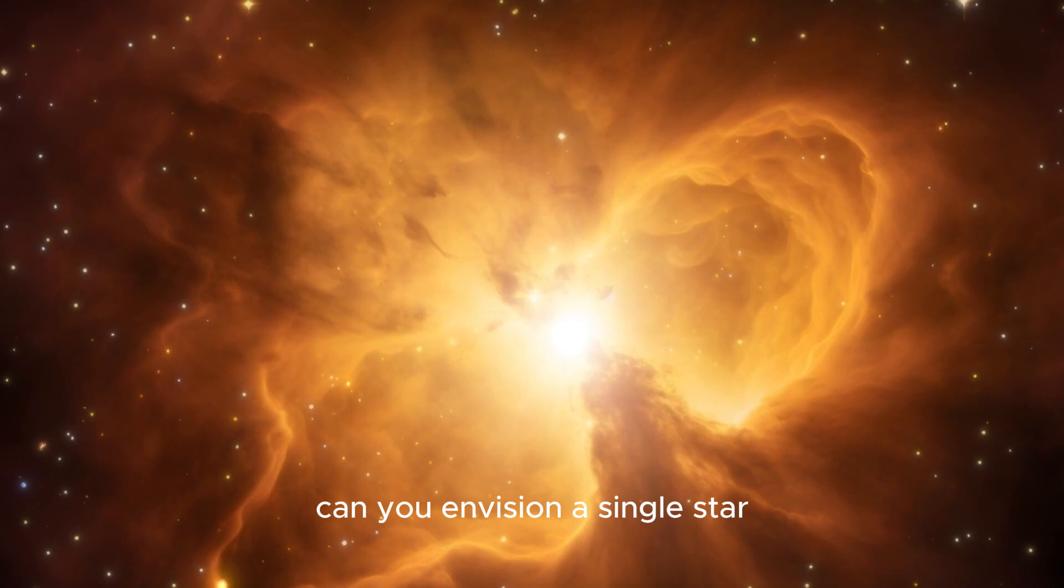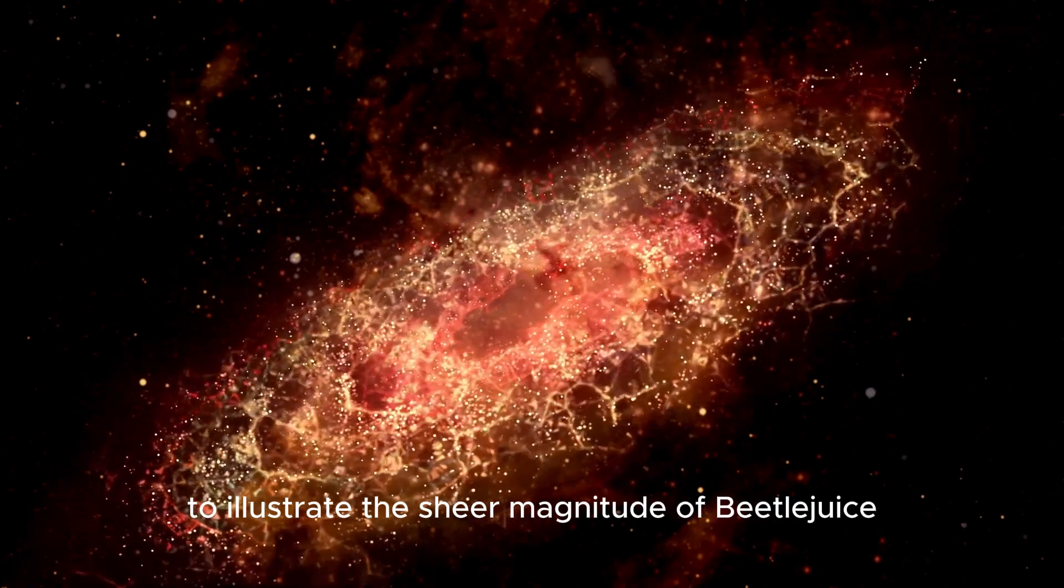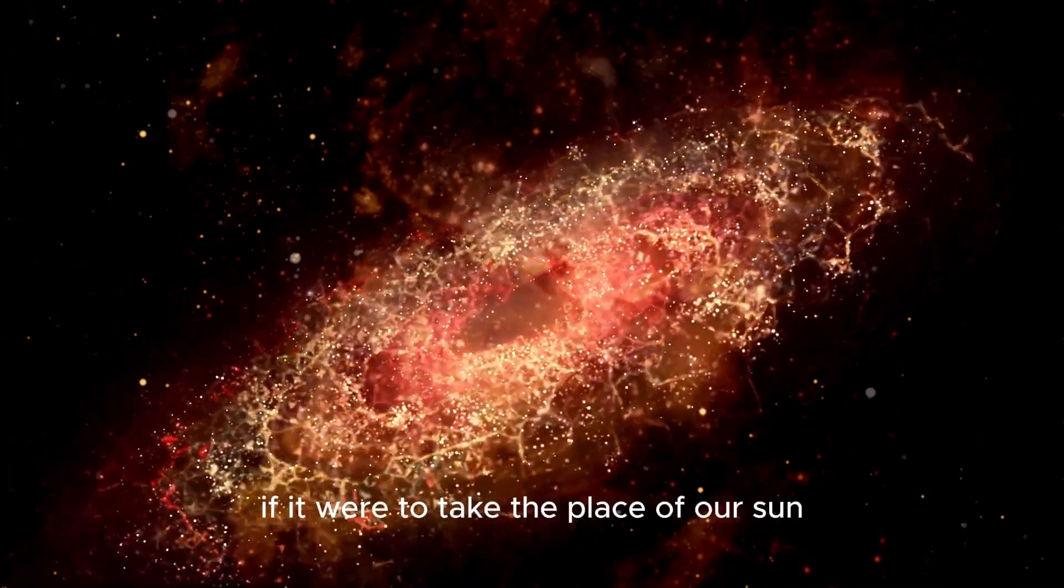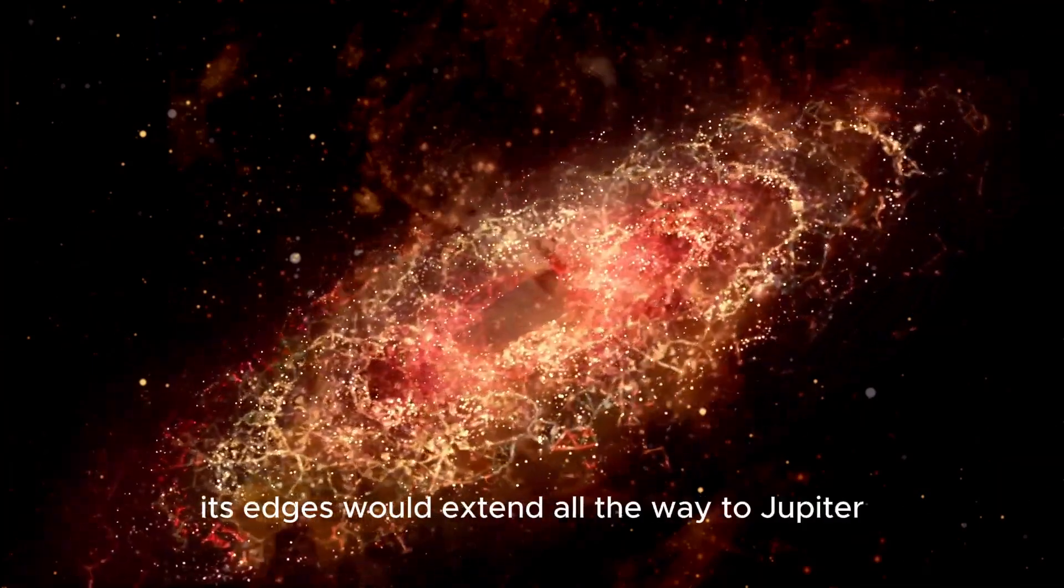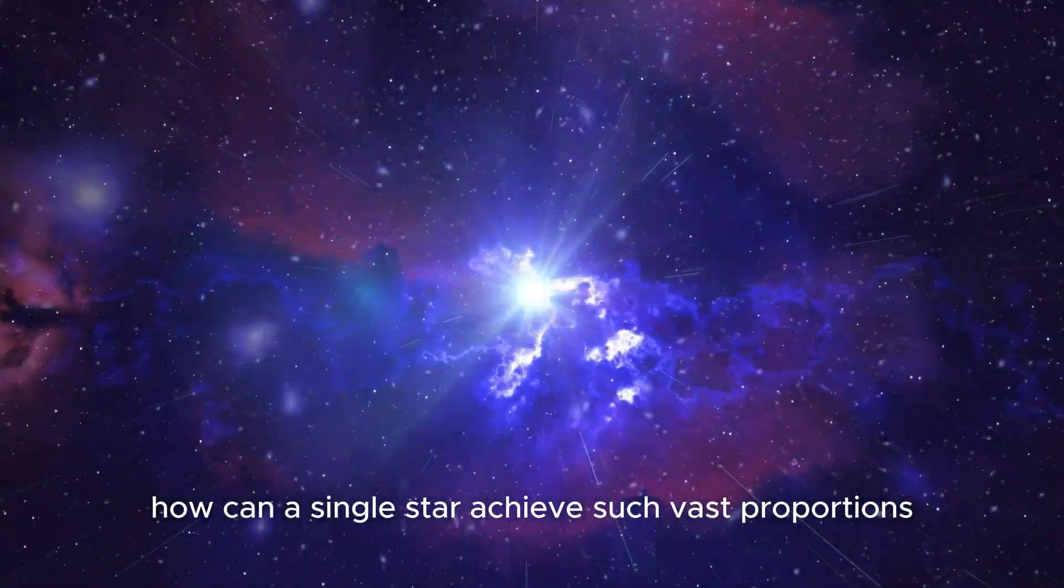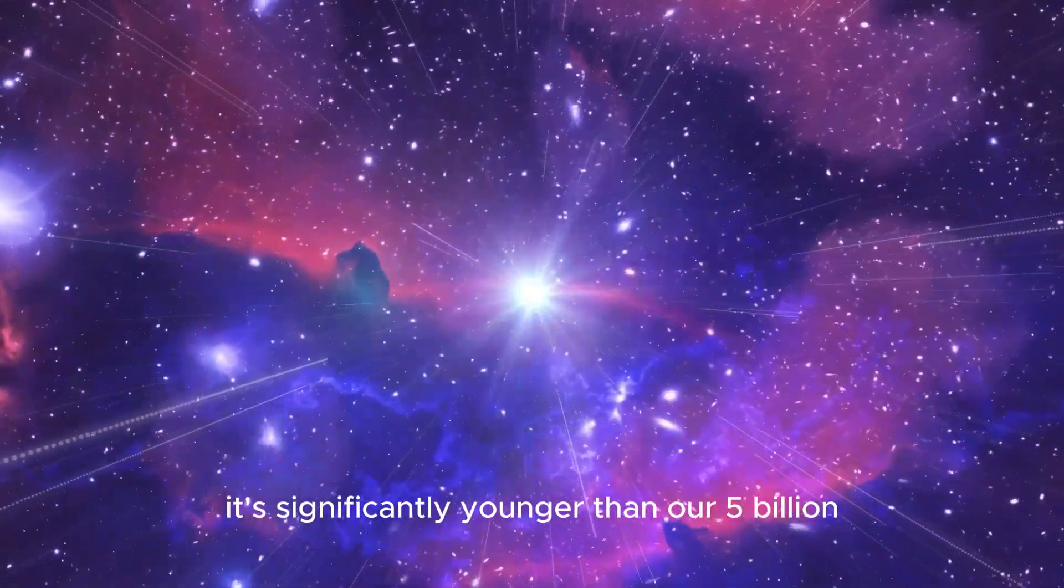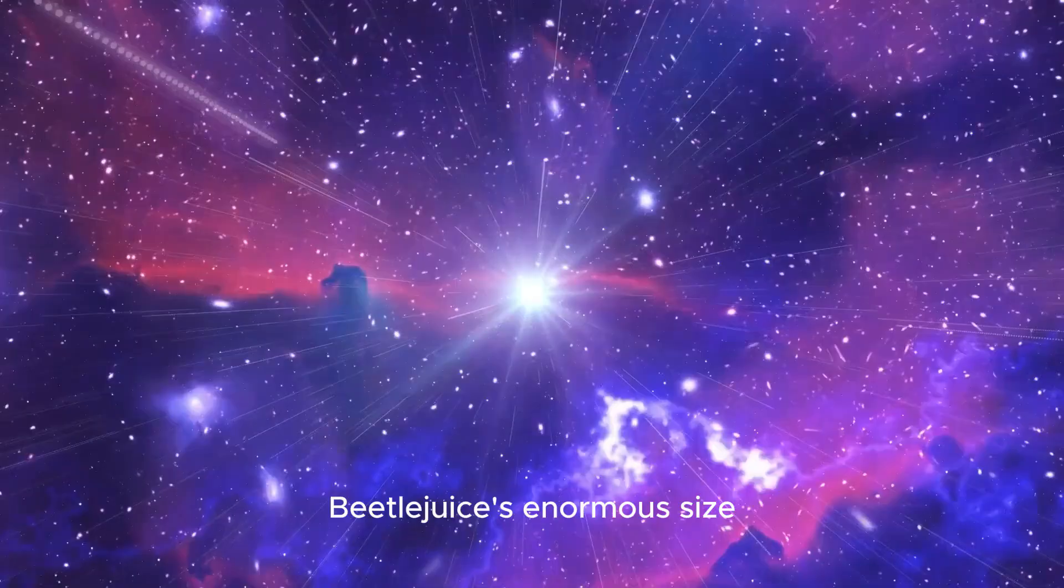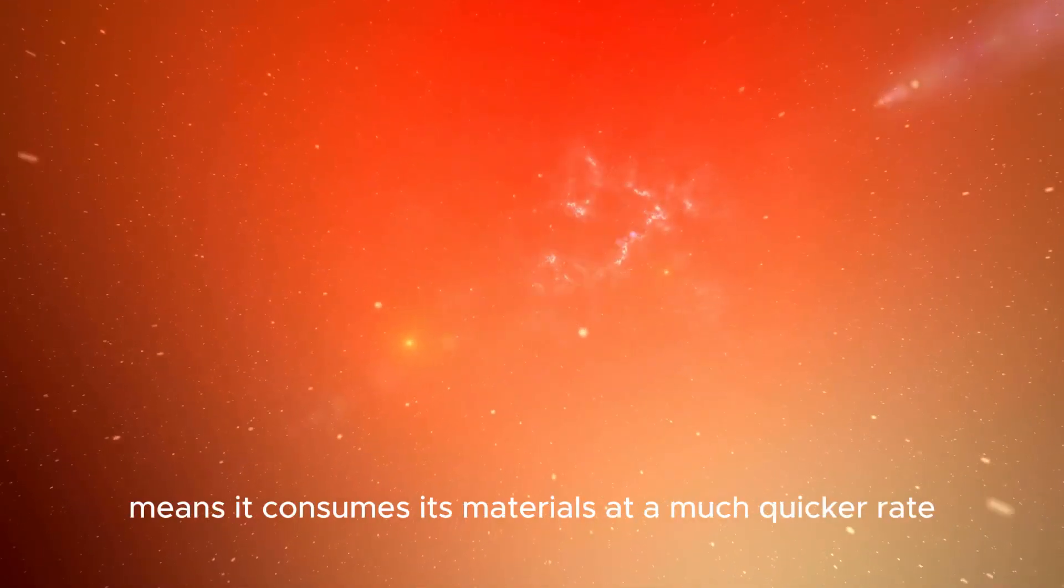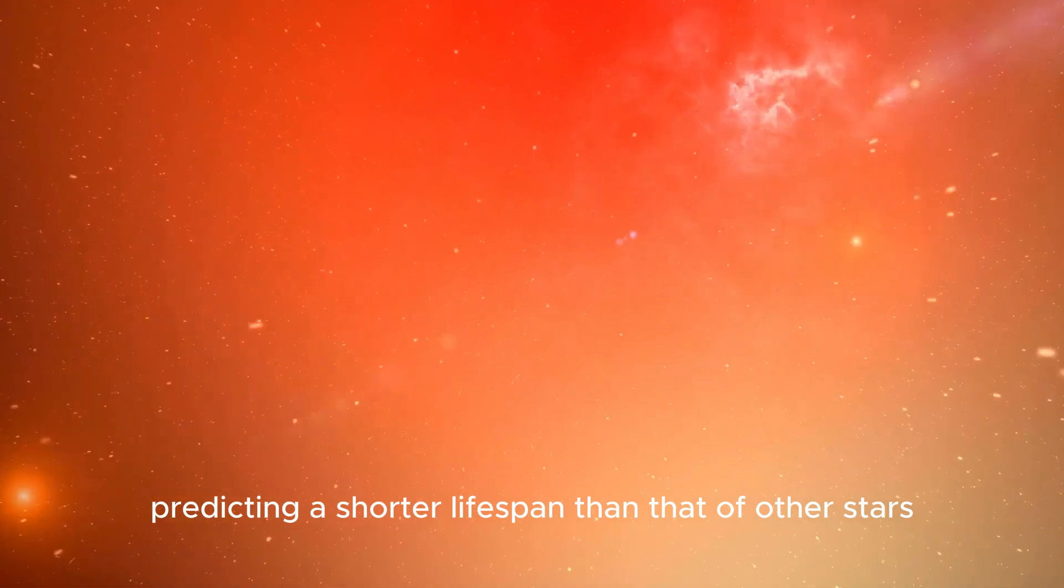Can you envision a single star dwarfing our entire solar system? To illustrate the sheer magnitude of Betelgeuse, if it were to take the place of our sun, its edges would extend all the way to Jupiter. At 10 million years old, it's significantly younger than our 5 billion year old sun, but Betelgeuse's enormous size means it consumes its materials at a much quicker rate, predicting a shorter lifespan than that of other stars.